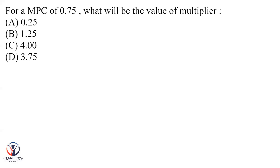For a marginal propensity to consume of 0.75, what will be the value of the multiplier? The multiplier is 1 divided by 1 minus MPC.